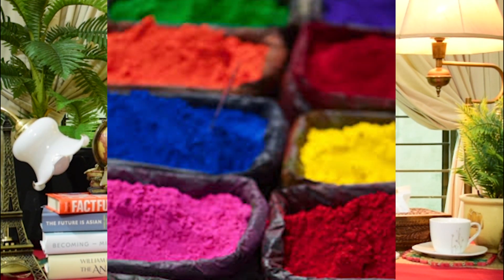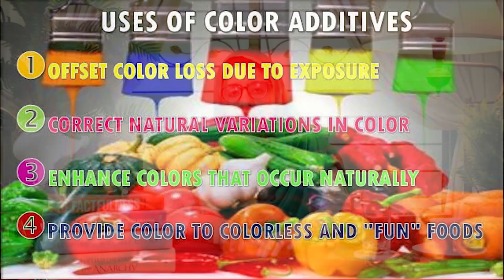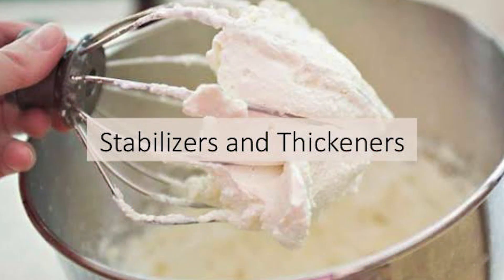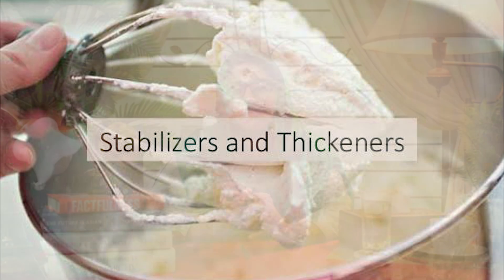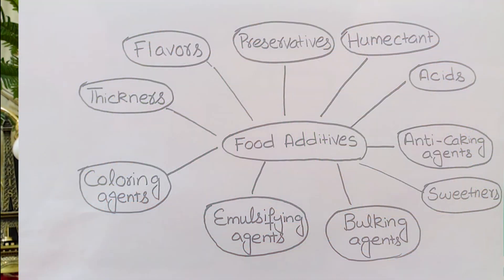After this we will see Coloring Agents. Different colors are added to food products — we add food colors such as red in various food articles, medicines, and other products. A very common coloring agent is tartrazine, which is widely used. After this we will see Thickeners. Thickeners increase the viscosity and thickness of food.